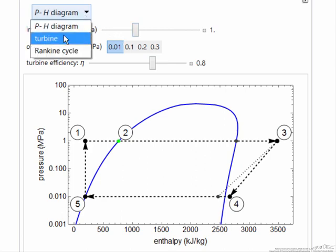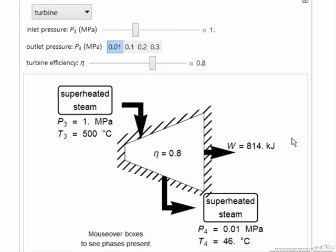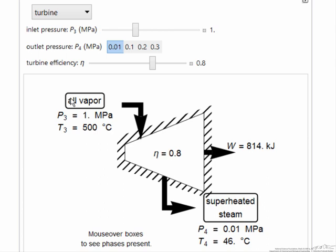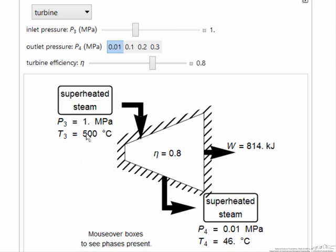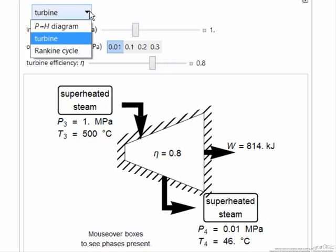The other options we have are to look at the conditions in the turbine, so it shows the inlet conditions and the outlet conditions. This tells us here we have all vapor, here coming in we also have all vapor, and of course as we change these conditions, we change those conditions where we can have a vapor liquid mixture leaving the turbine.